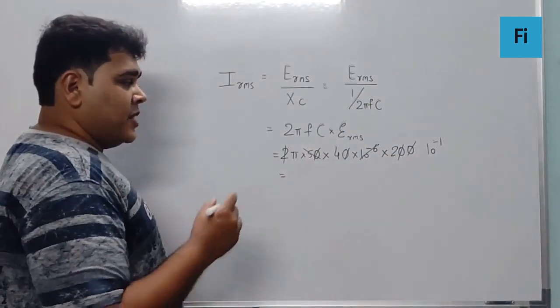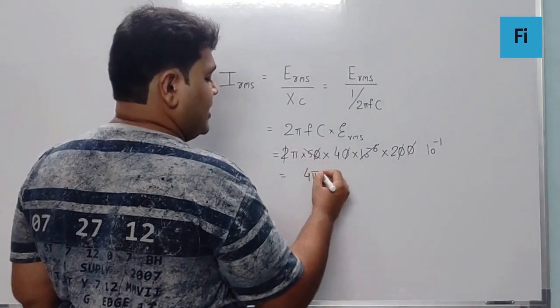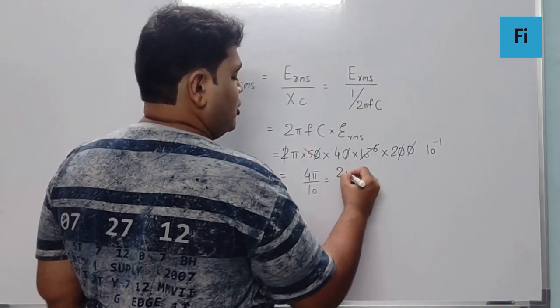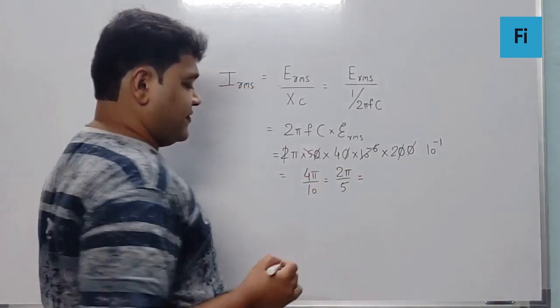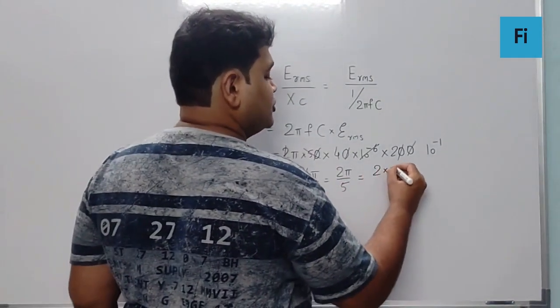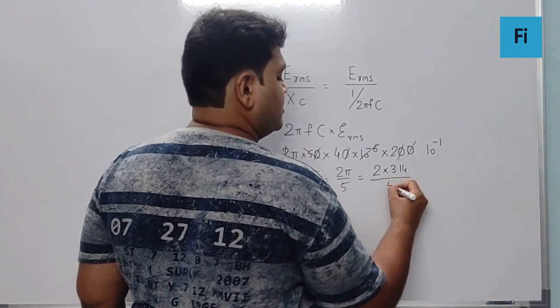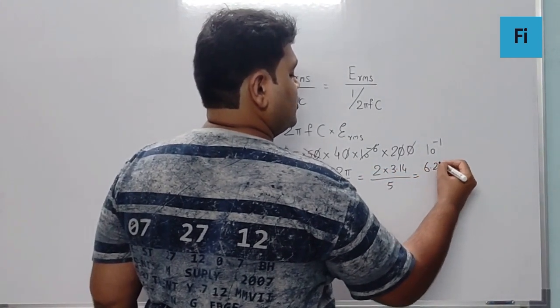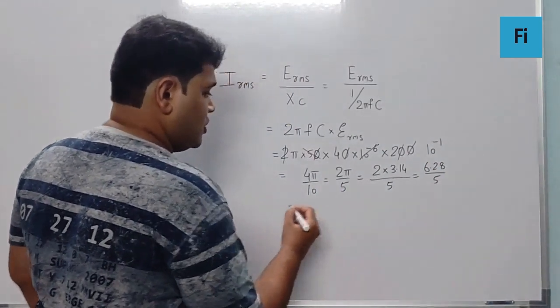So now we can say that this is like 4 pi by 10 or 2 pi by 5. Now if we try to calculate this, I can say that it is 2 into 3.14 by 5. That is 6.28 by 5.